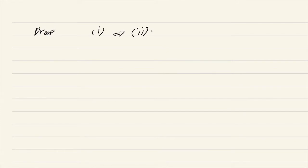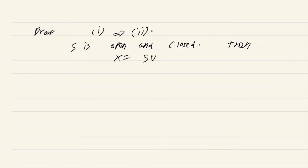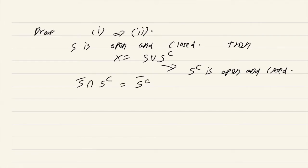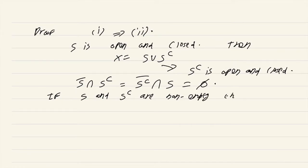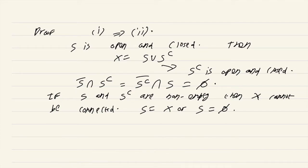Let us show that 1 implies 2. Suppose x is connected and suppose S is open and closed. Then x equals S union S-complement, and S-complement is also open and closed, because open and closedness are dual notions. Since S and S-complement are both open and closed, S-closure intersect S-complement and S-complement-closure intersect S are both empty, which means if S and S-complement are both non-empty, x cannot be connected — this would form a separation. So we are forced to conclude that either S equals x or S is the empty set.